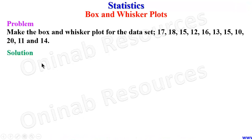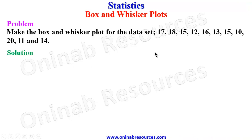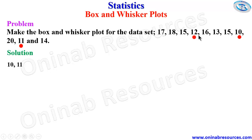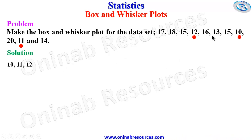In our solution, we look for the five-figure summary of this data set. Before that, we are going to arrange in ascending order from the lowest to the highest. The lowest value here is 10, followed by 11, then 12, then 13.